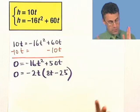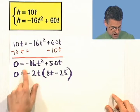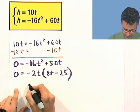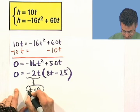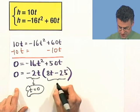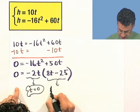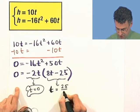Two things equaling zero. Only one of two ways that could happen: either one zero or the other zero. So if this first piece is zero, that means that t has to be zero. And if this equals zero, that means t has to be equal to 25 over 8.